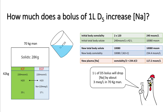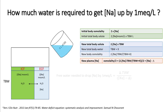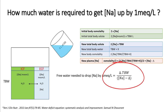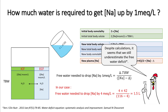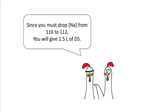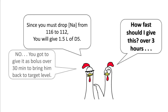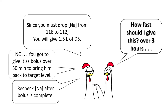Let's see how much one liter of D5W changes sodium. From our calculation, in a 70 kg person, one liter of D5W bolus will drop sodium by three milliequivalents. You can work up the equation for free water deficit: it comes out to be change in sodium multiplied by total body water, divided by sodium minus change in sodium. In our case, the amount of free water to drop sodium from 116 to 112 is 1.5 liters. Note that the free water deficit calculation still underestimates the amount needed. You have to give this patient 1.5 liters of D5W as a bolus over 30 minutes to bring back to the target level as soon as possible. Avoid giving D5W as a drip, as it will take too long. Once the bolus is complete, recheck your sodium.